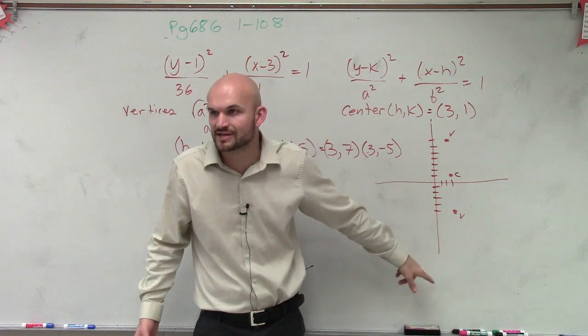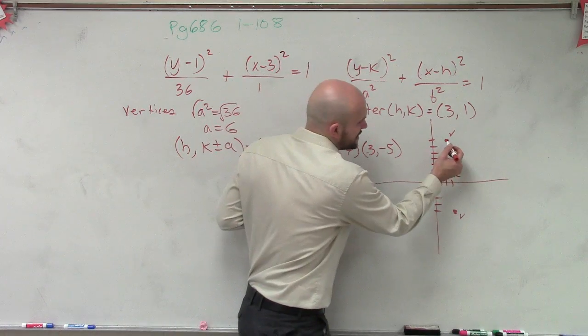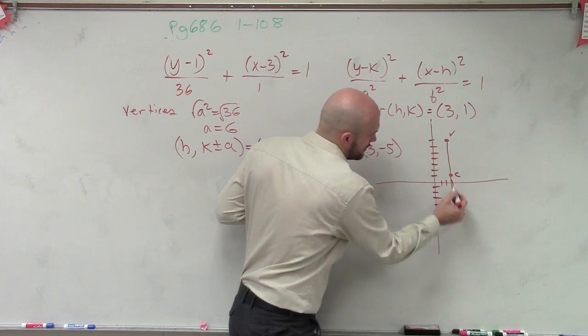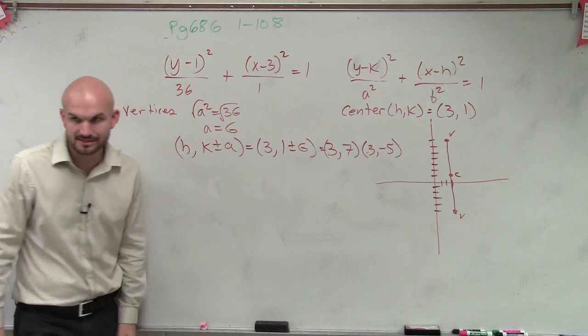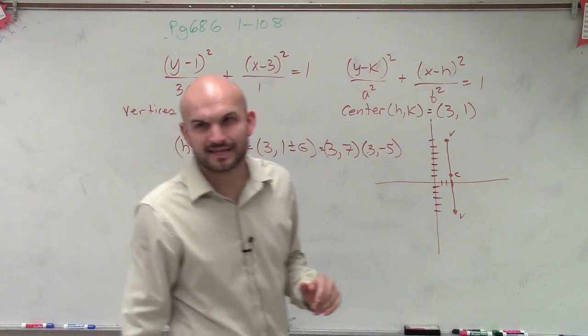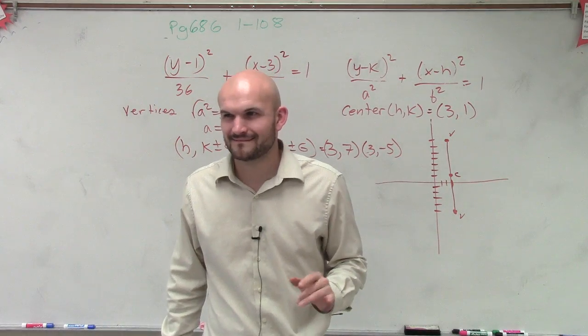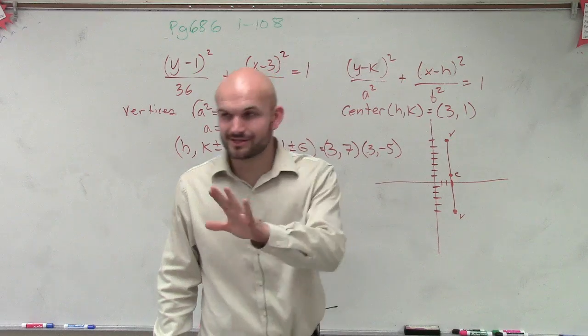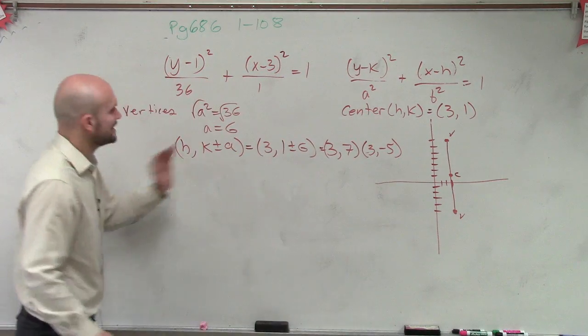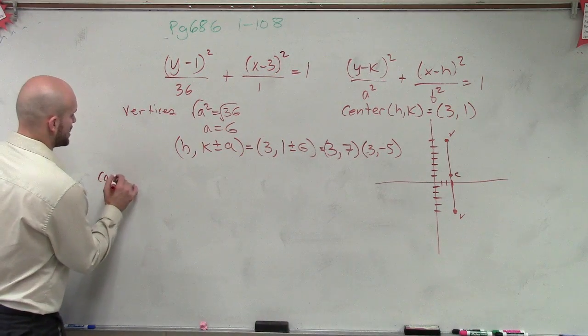So now what we've just created is our major axis. Yes? Now there's one more thing that lies on that major axis. Anybody remember? The foci, right? We'll get to the foci here in just a second though. Let's go and determine now what the co-vertices are.